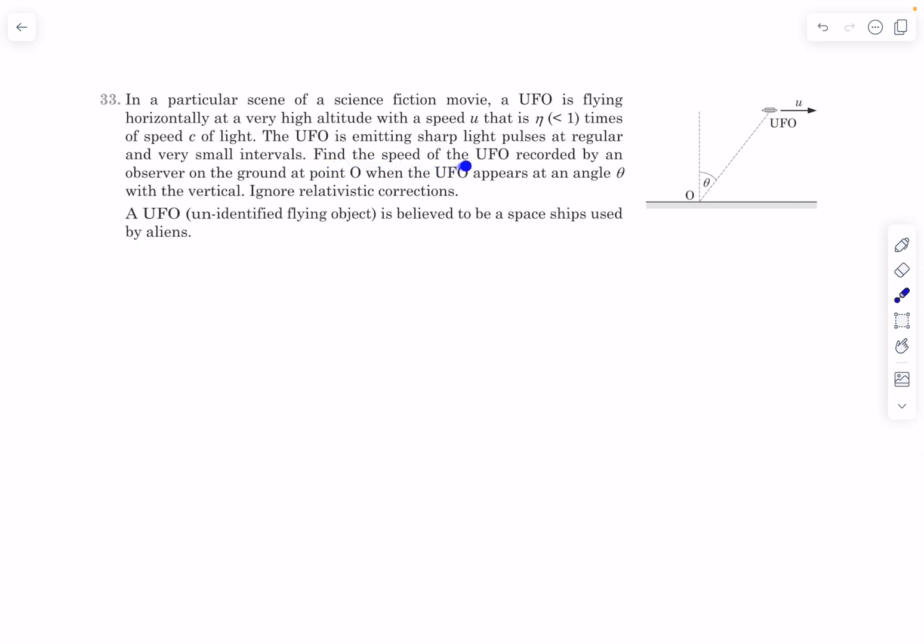We have to find the speed of the UFO as observed by a guy on the ground at point O when the UFO appears at an angle of θ with the vertical.